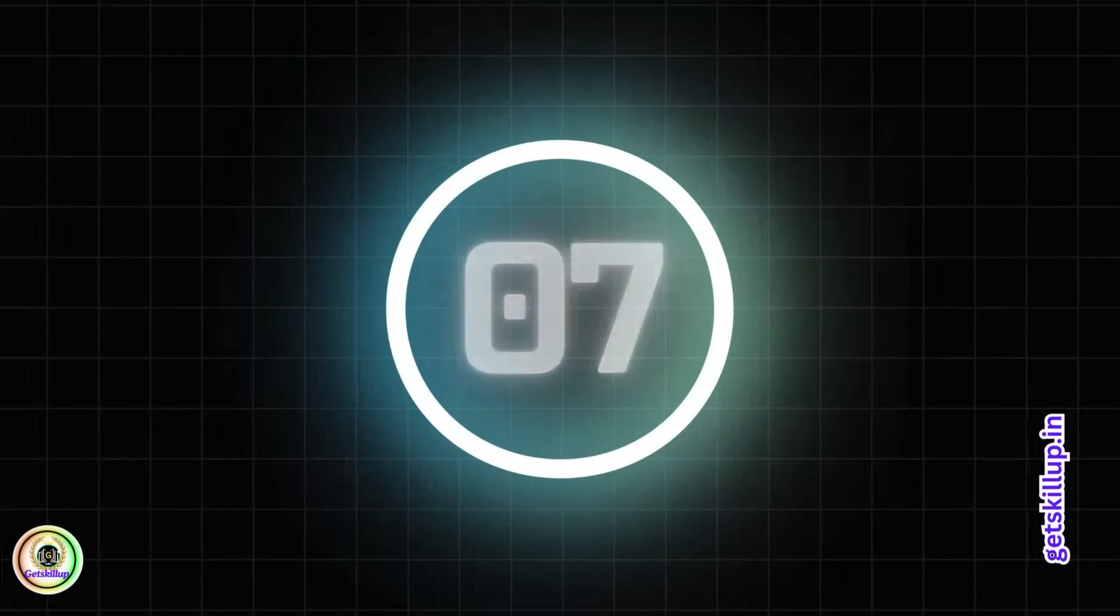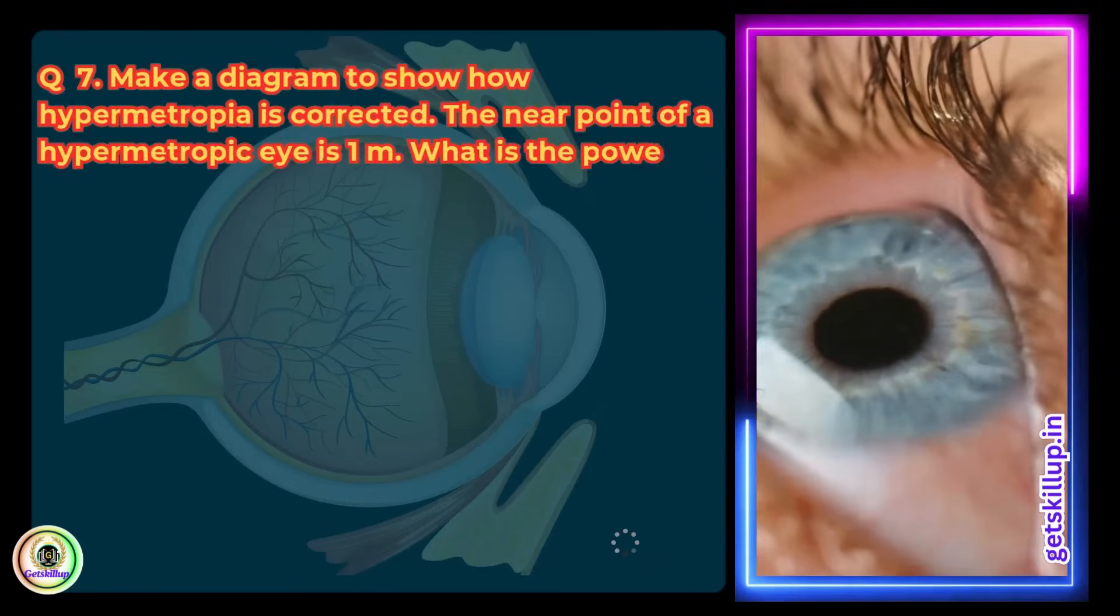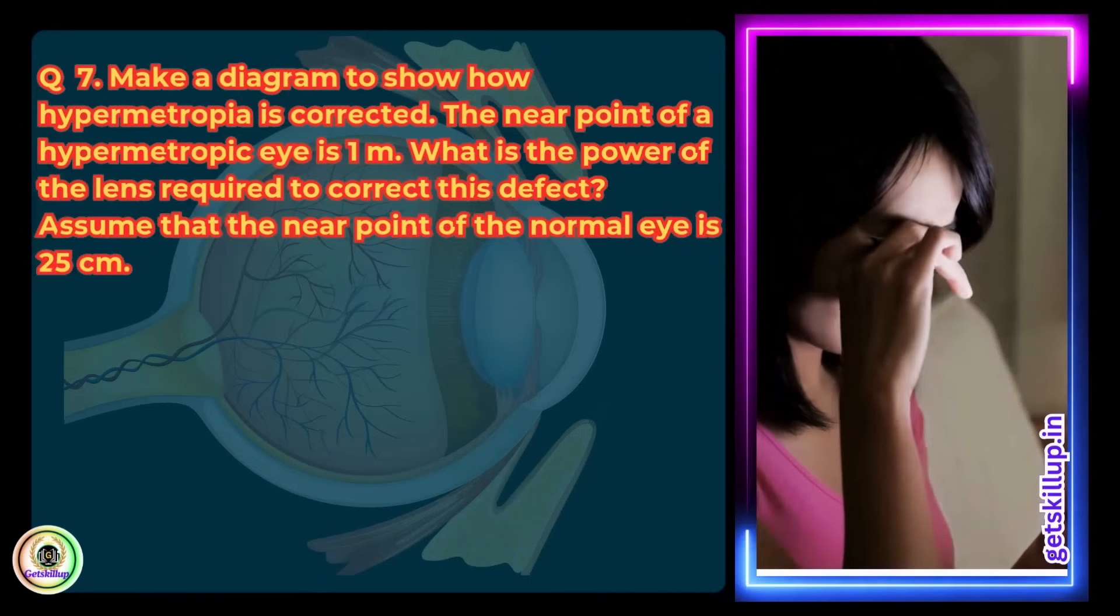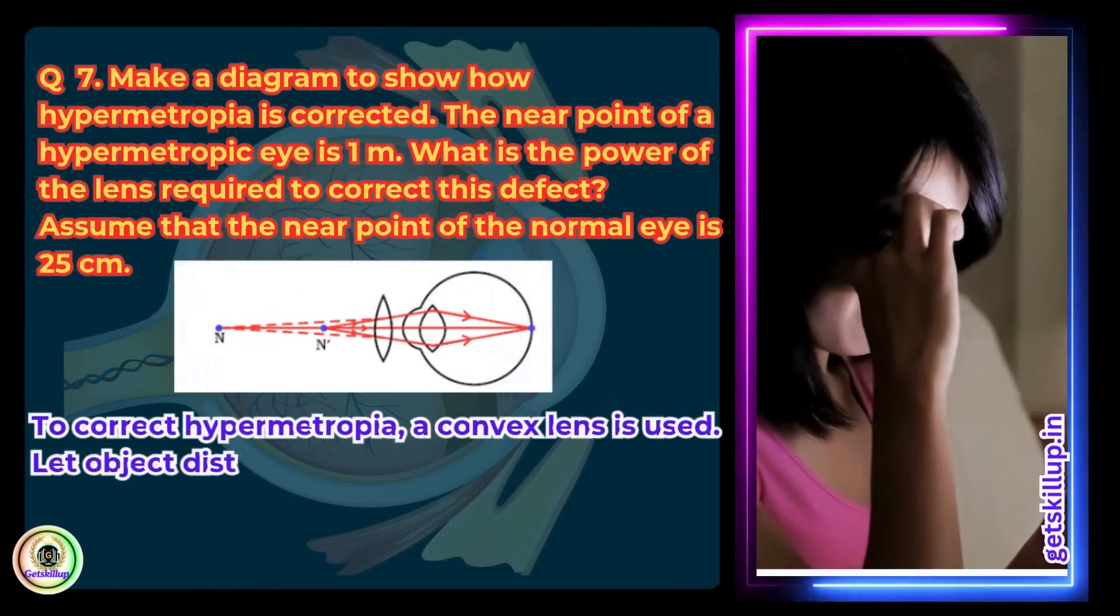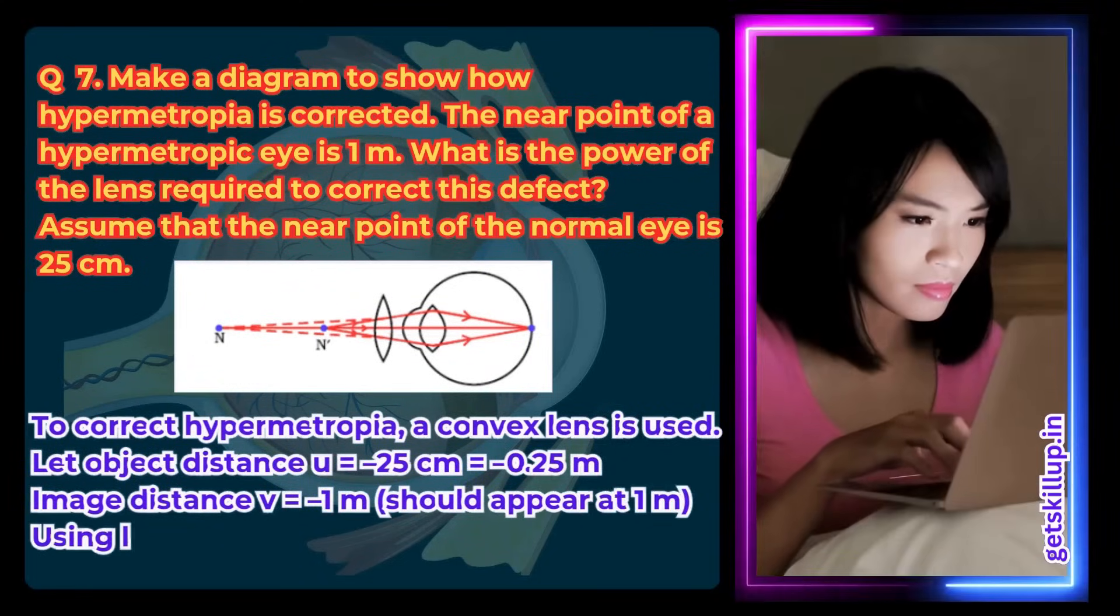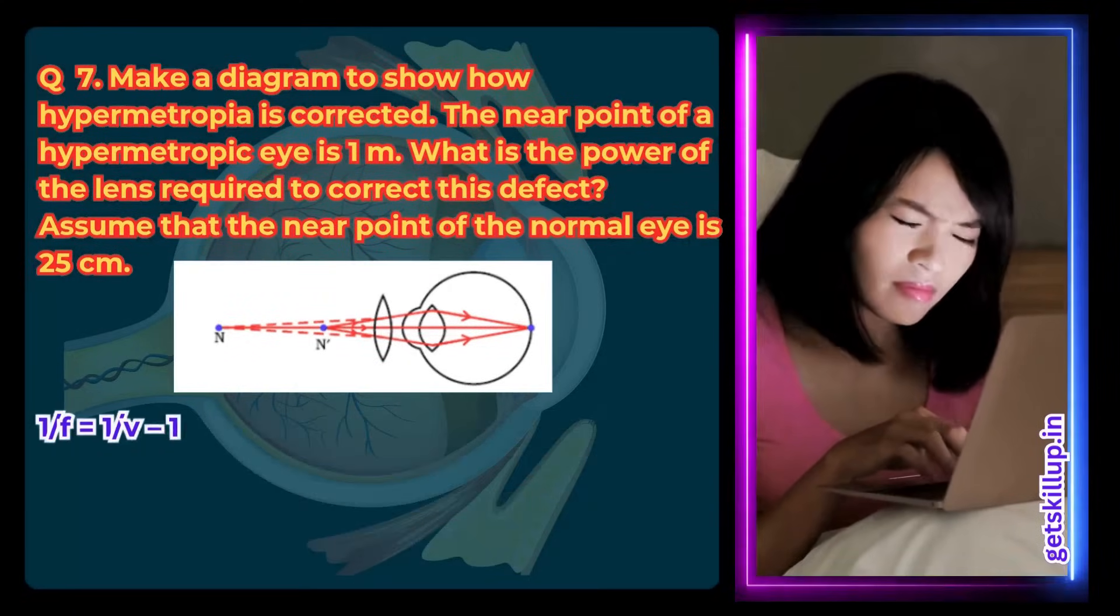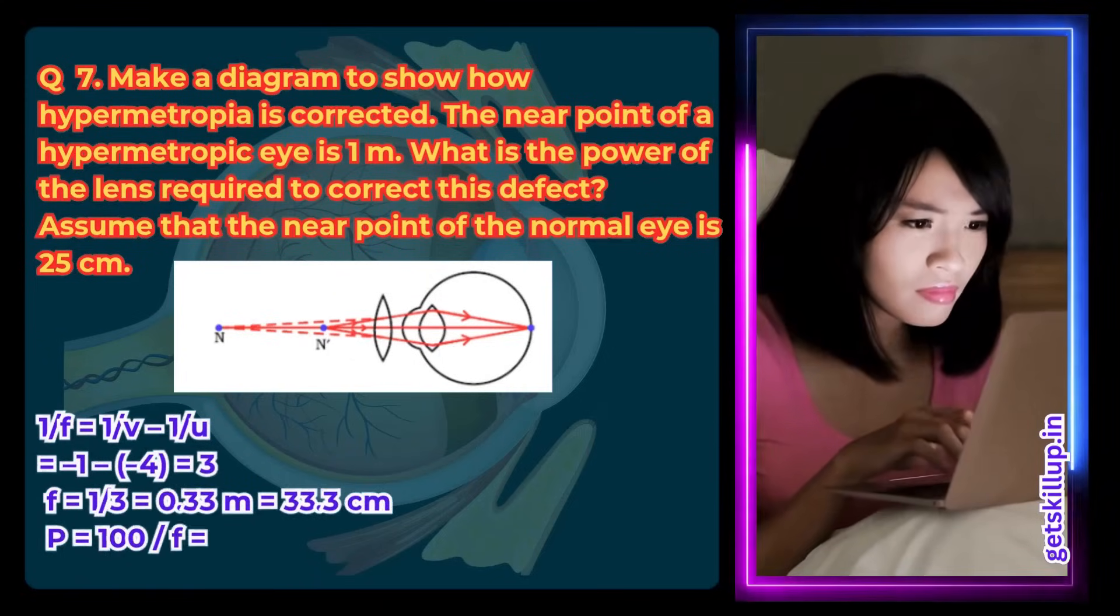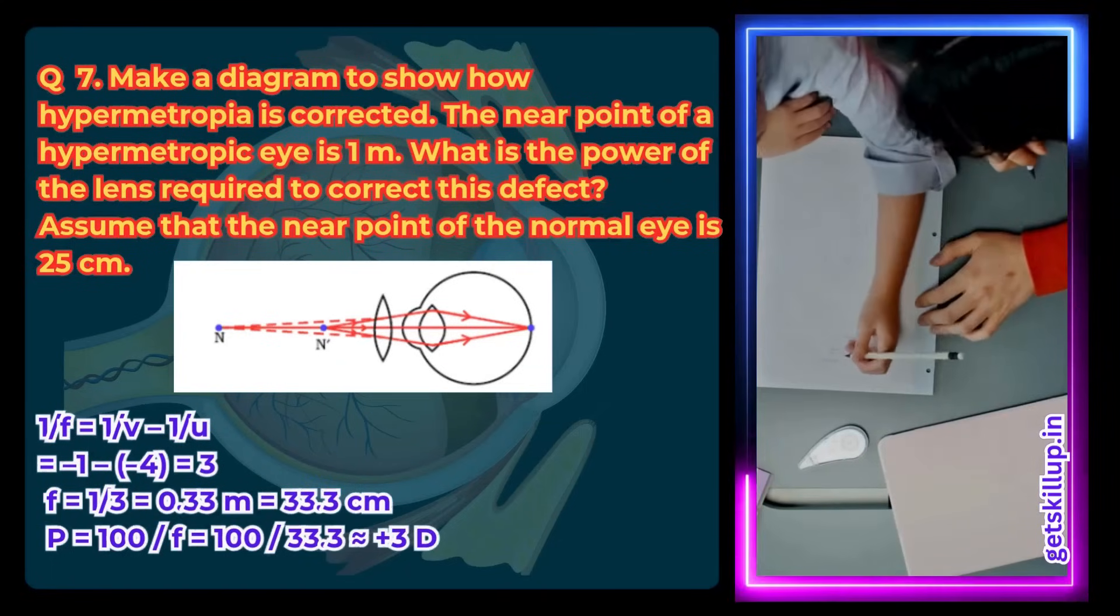Question 7. Make a diagram to show how hypermetropia is corrected. The near point of a hypermetropic eye is 1 meter. What is the power of the lens required to correct this defect? Assume that the near point of the normal eye is 25 cm. Answer: To correct hypermetropia, a convex lens is used. Let object distance U equals minus 25 cm, which is equal to minus 0.25 meter. Image distance V equals minus 1 meter. Using lens formula: 1 by F equals 1 by V minus 1 by U, which is equal to minus 1 minus of minus 4 equals 3. F equals 1 by 3, which is equal to 0.33 meter, also 33.3 centimeters. Power equals 100 divided by F, approximately 3 diopters.